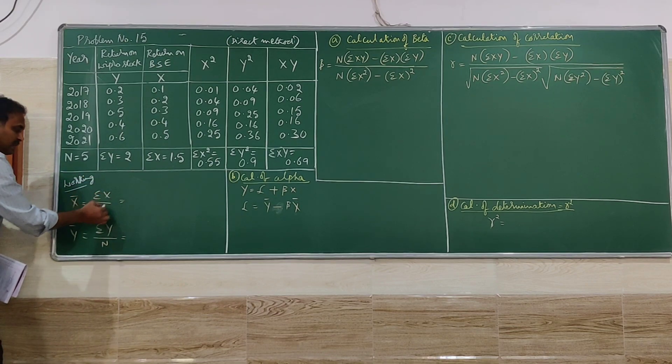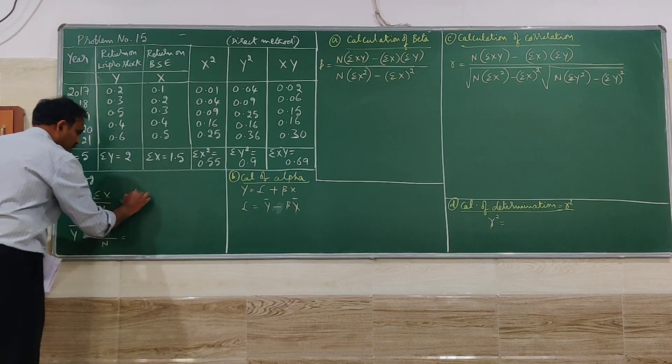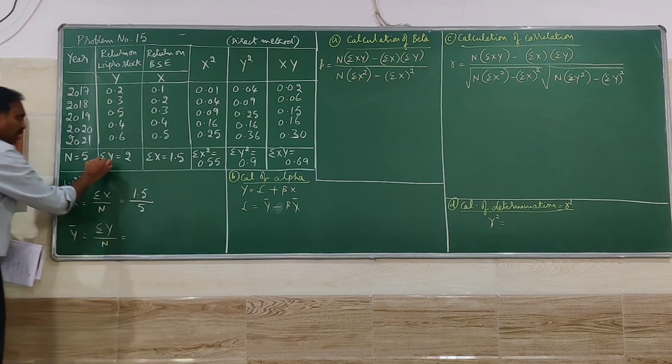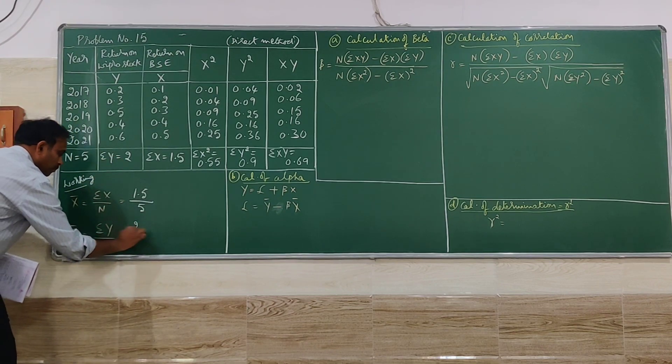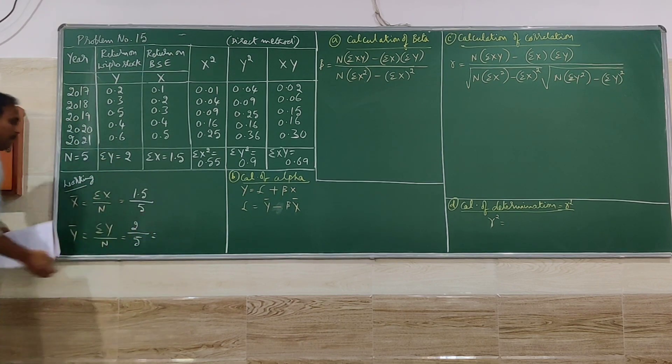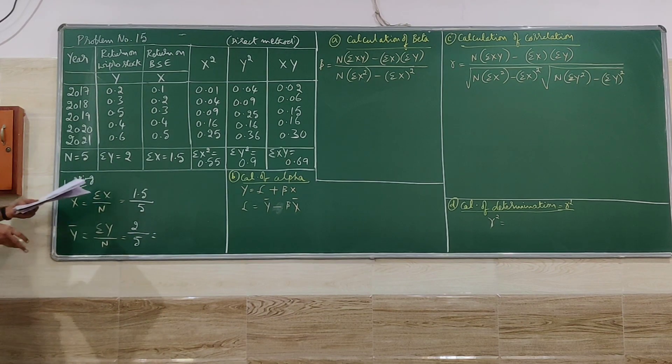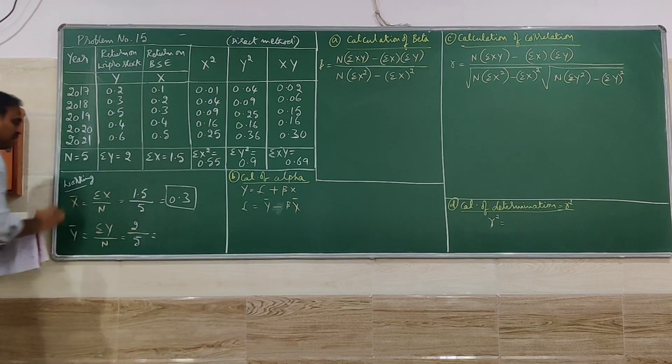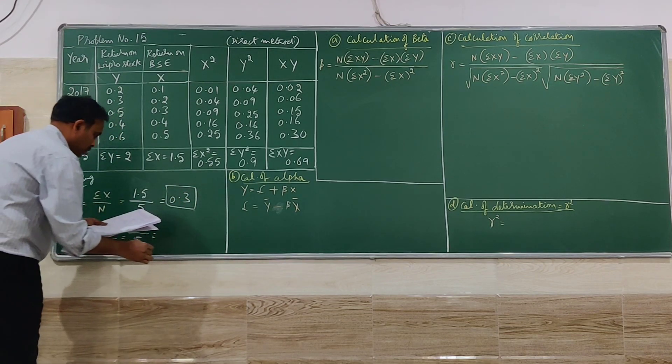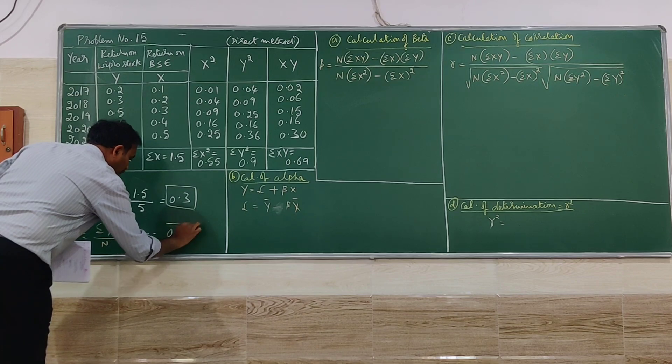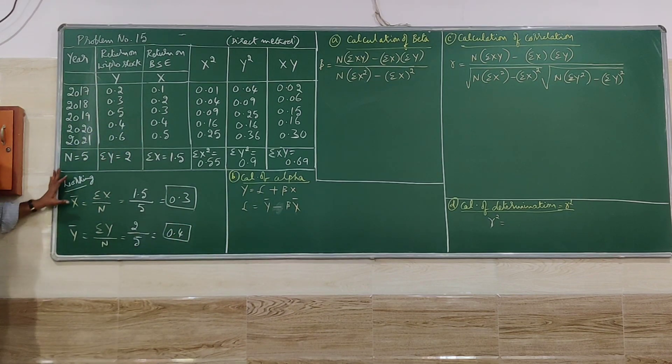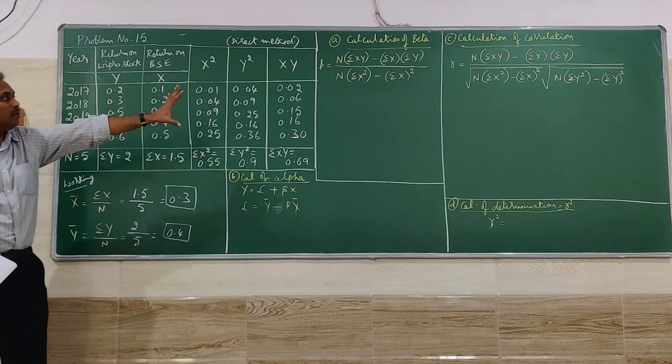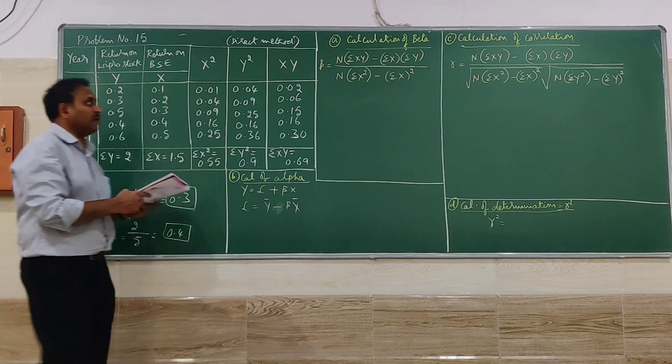To start with summation X divided by N. Summation X is 1.5, N is 5. Similarly summation Y is 2 divided by 5. So it is going to be 0.3 for X series and 0.4 for Y series. So once you find out the working, this will be helpful for working further. So we will go for that.